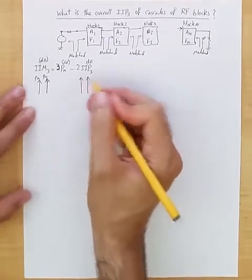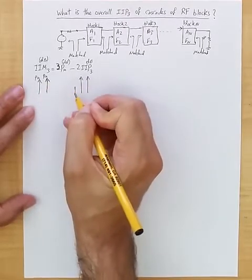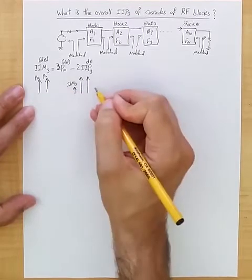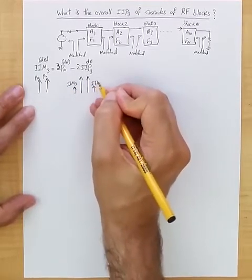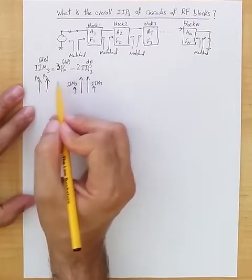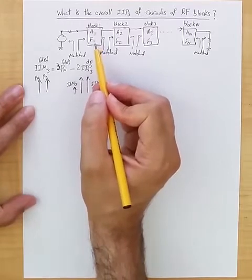And let's say input referred, so in addition to having these two Pn, we would have the intermodulation product of third order, input referred, with corresponding power in dB having this relationship between the input power to the block and its given or assumed IIP3.